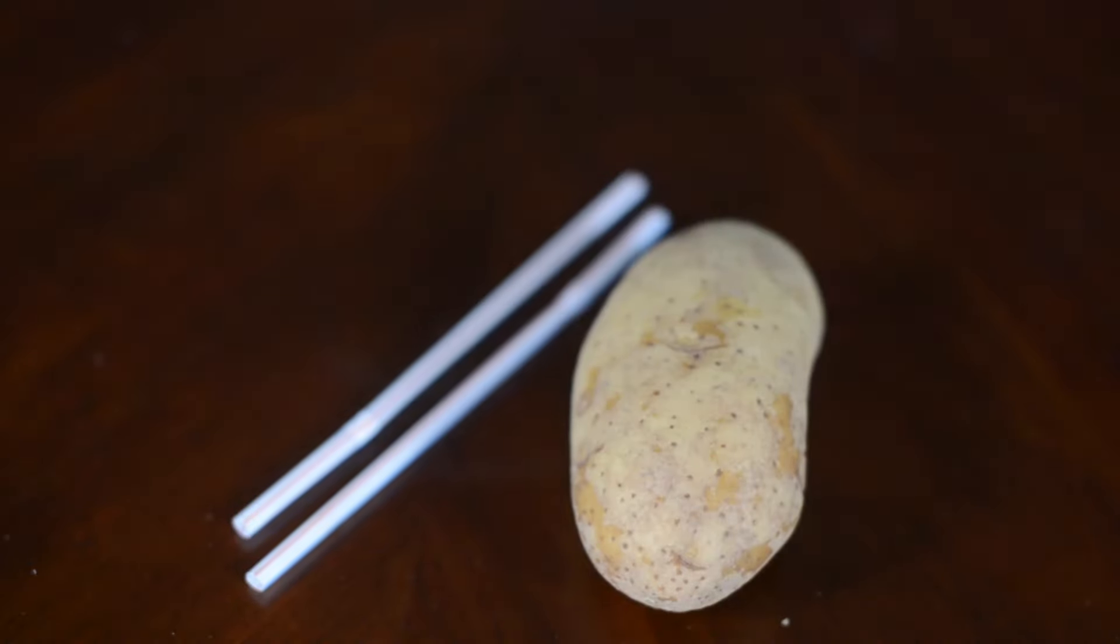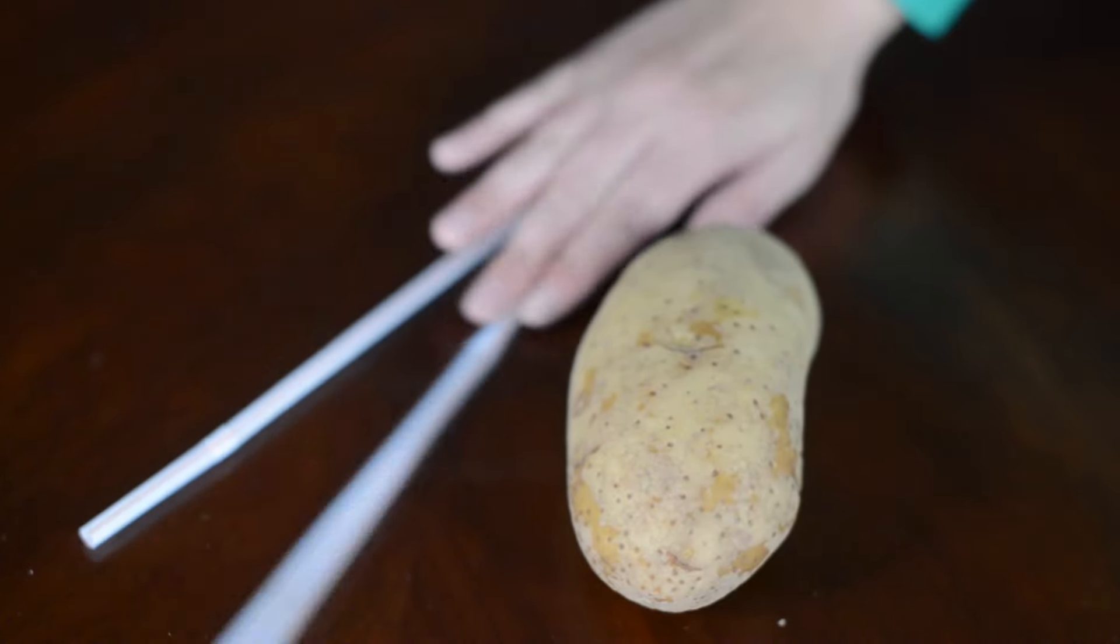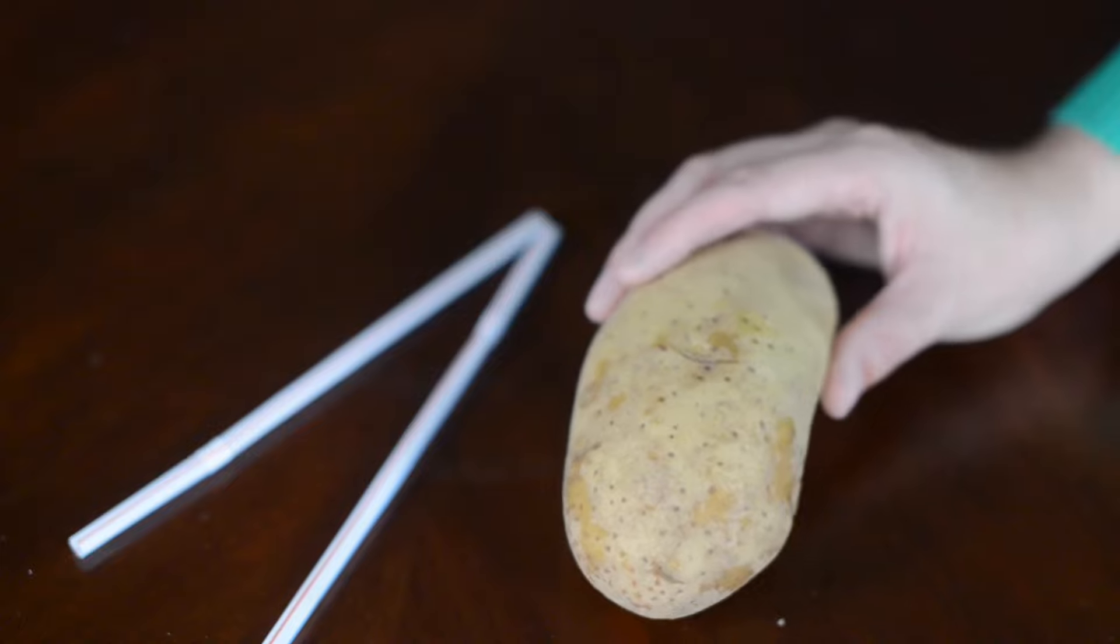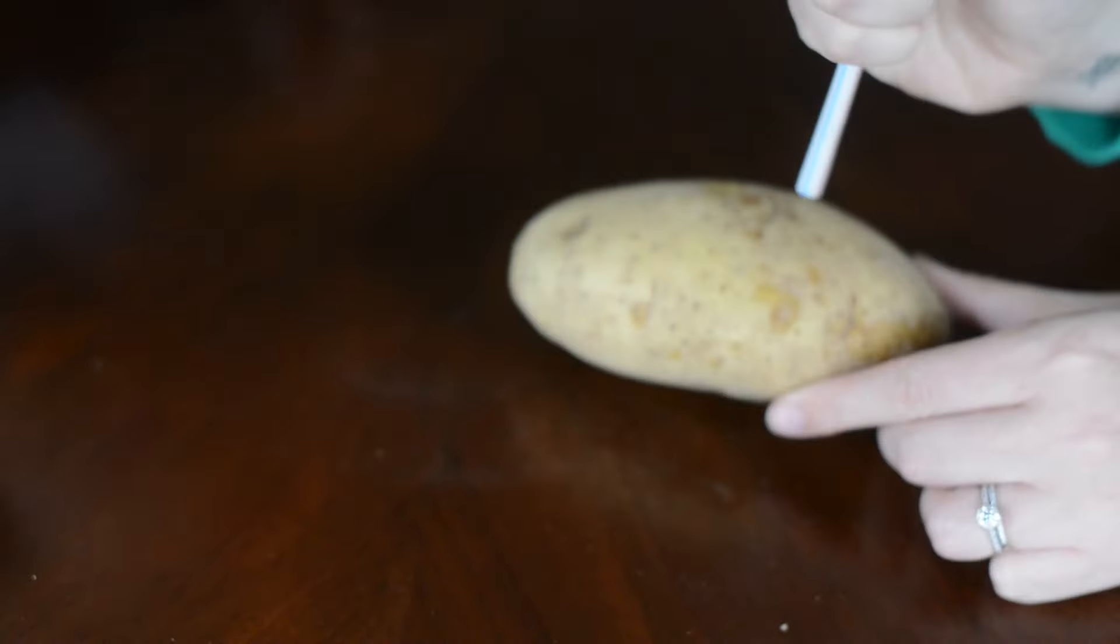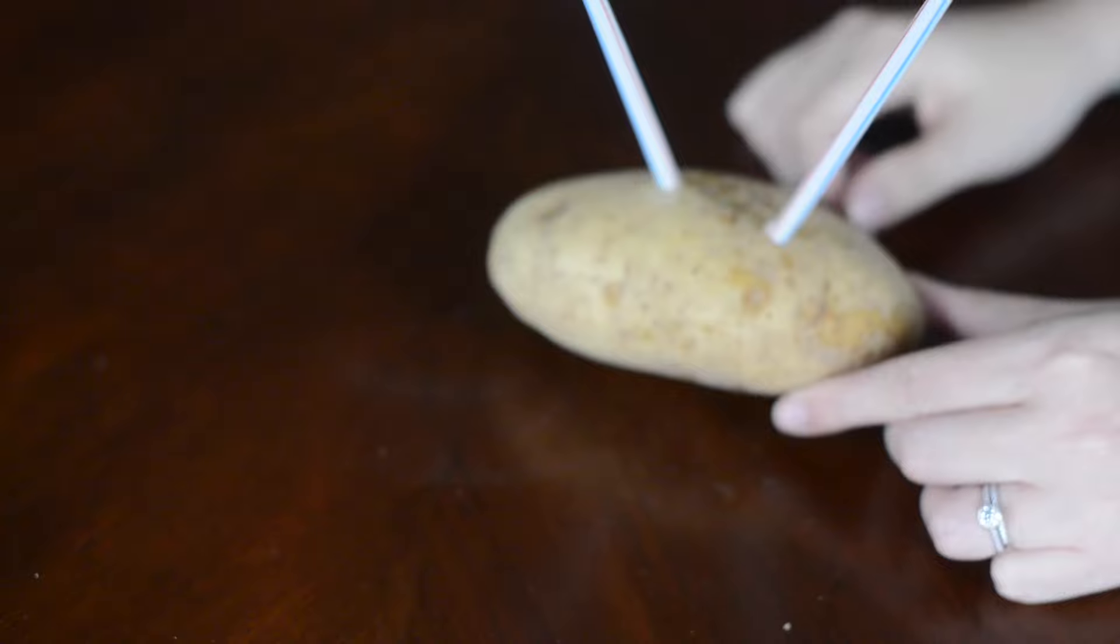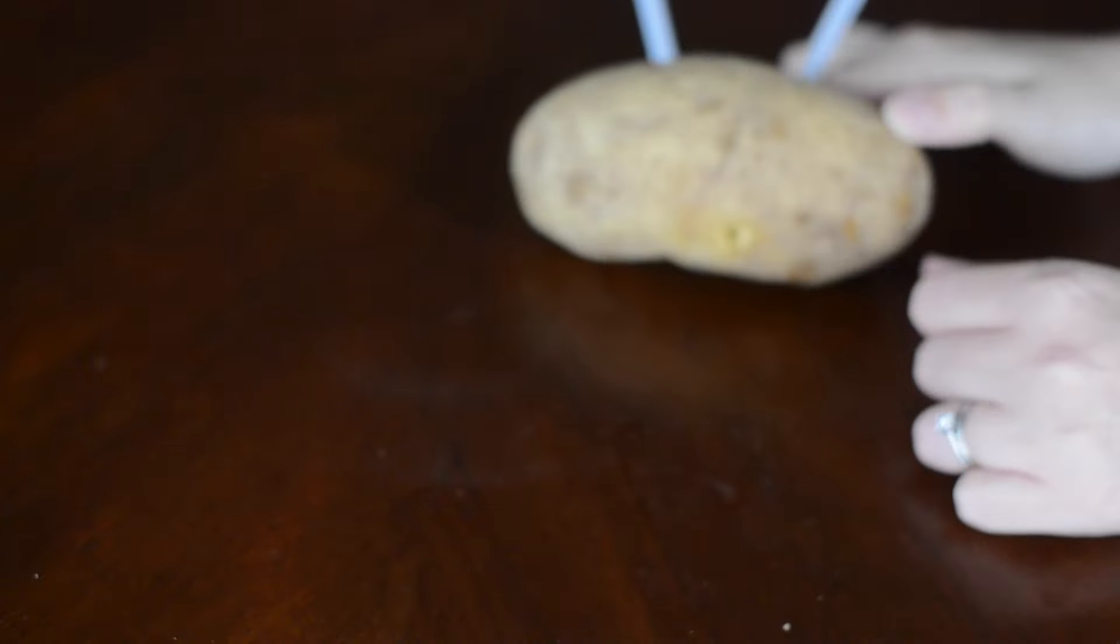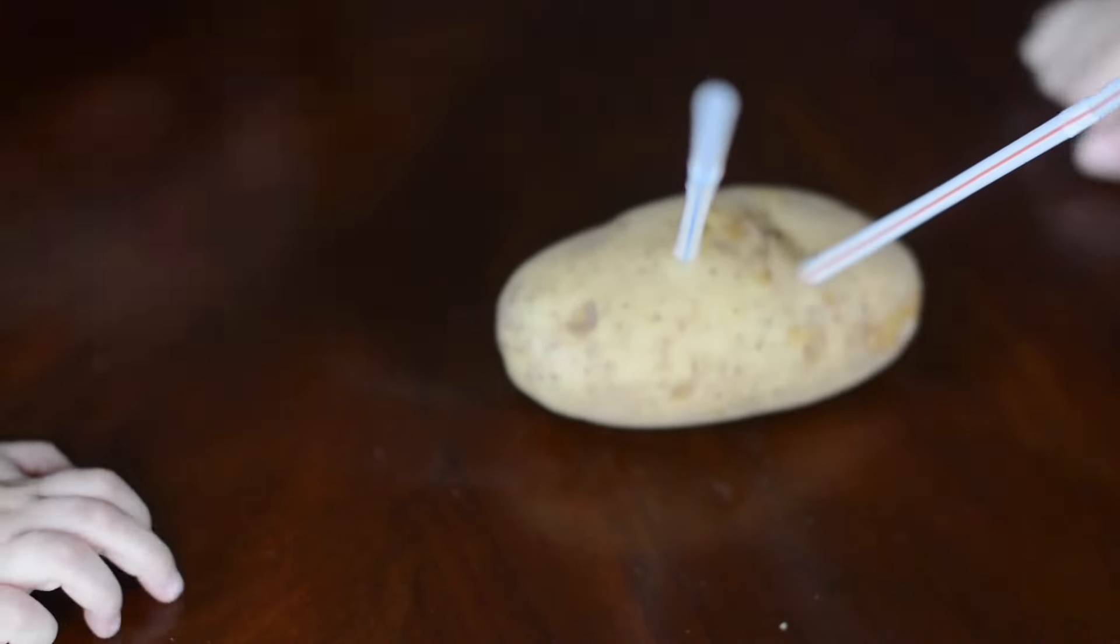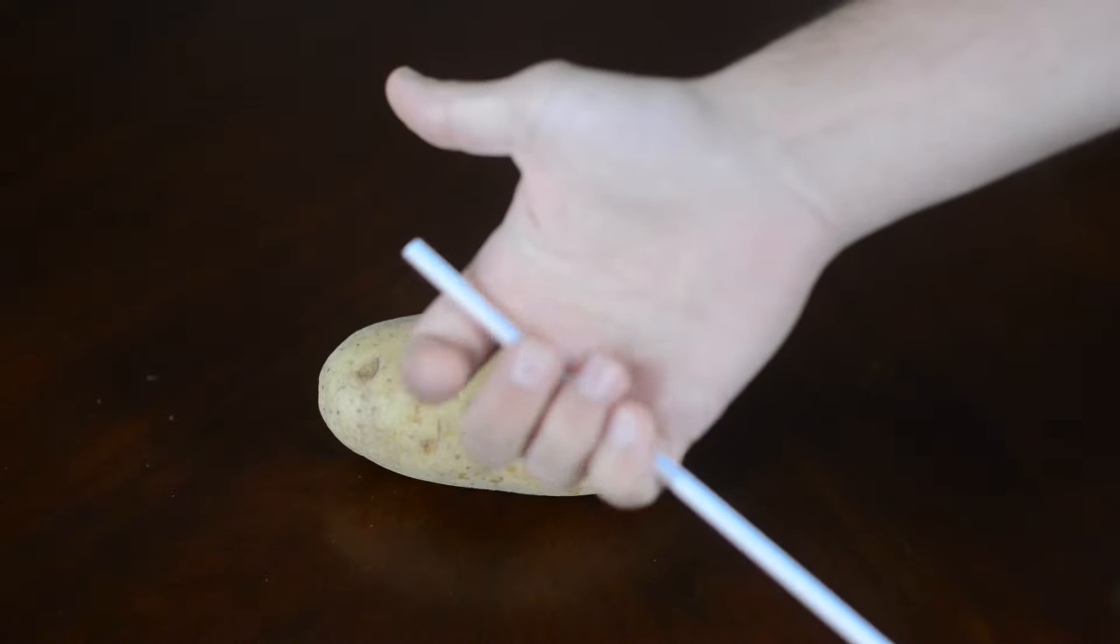What you'll need is a straw and a potato. A couple straws if you want your friends to try it. You might want to start by asking your friends if they can pierce a drinking straw through a potato. They will find that they cannot do it unless they know the secret.